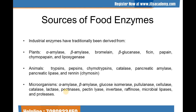From the animal source, the enzymes which can be derived are trypsins, pepsins, chymotrypsins, catalase, pancreatic amylase, pancreatic lipase, and renin.